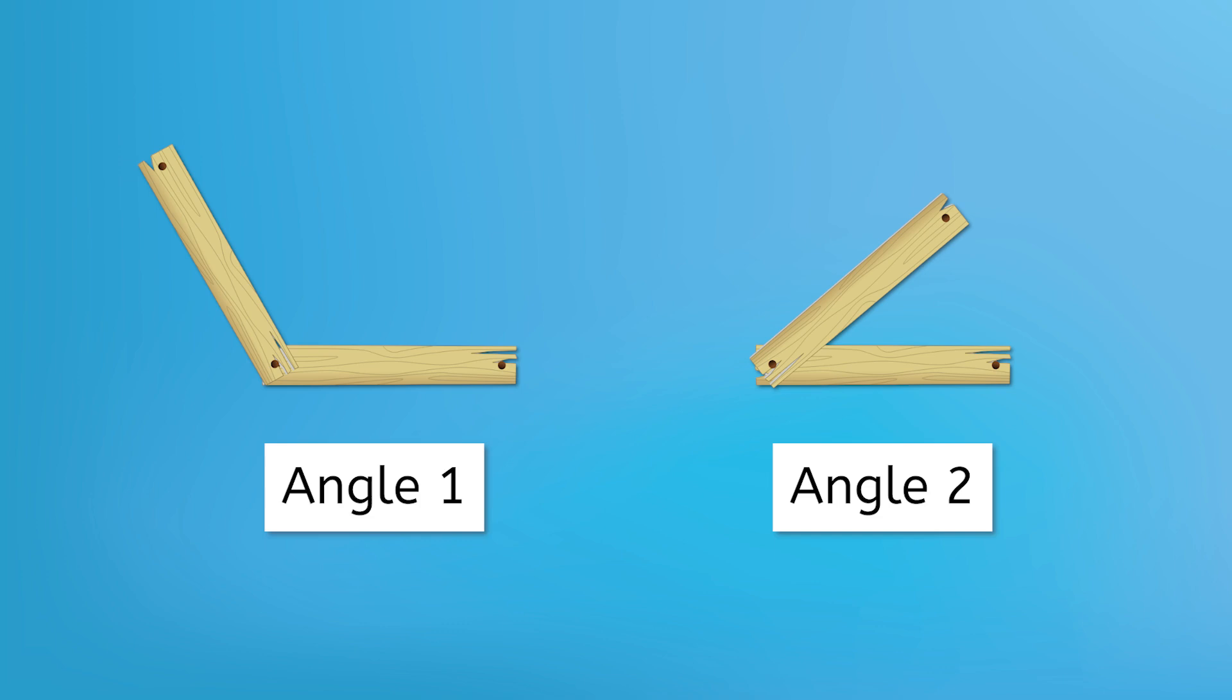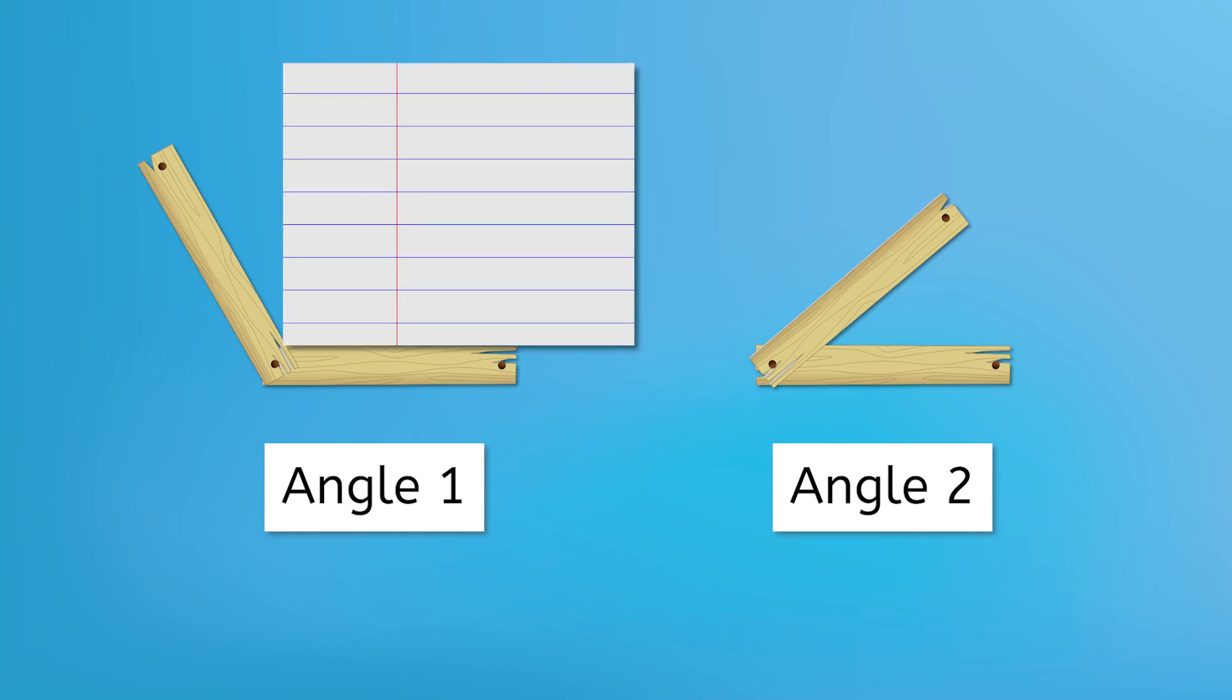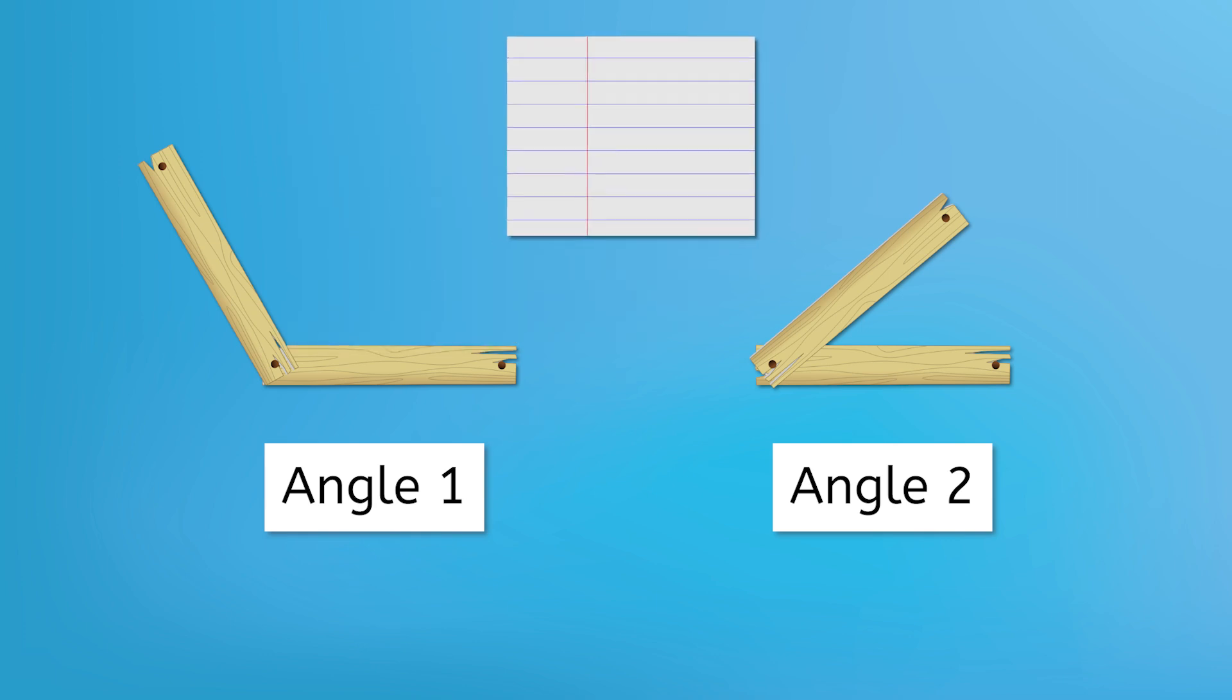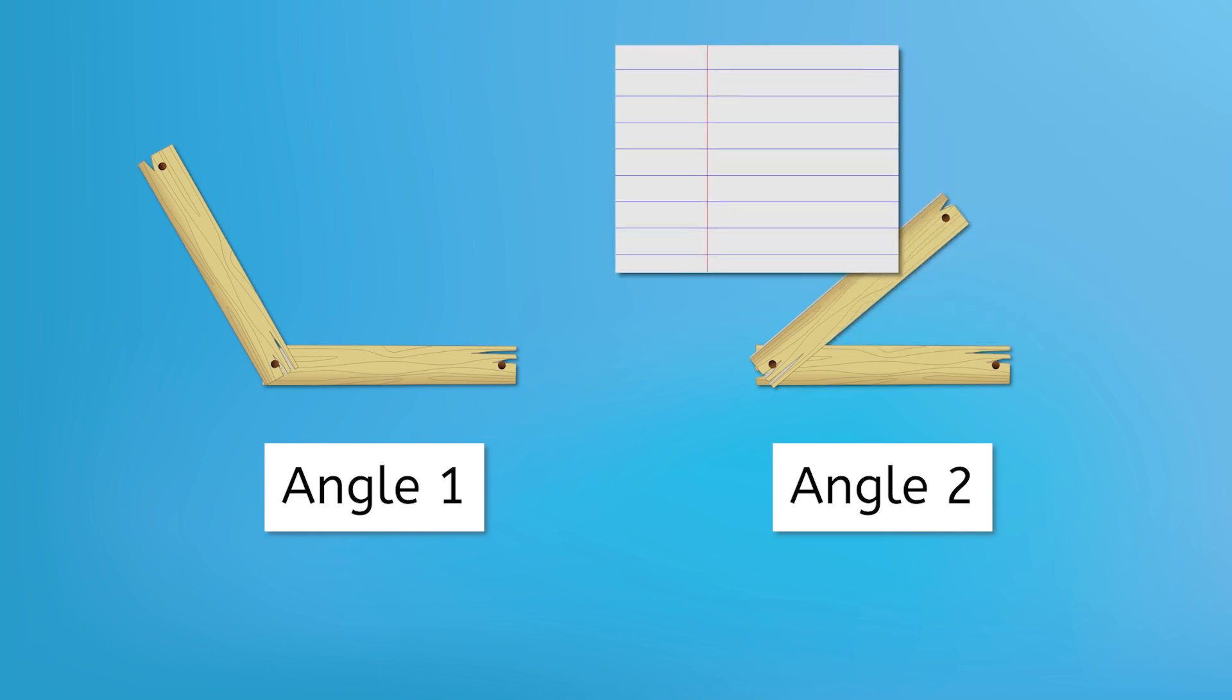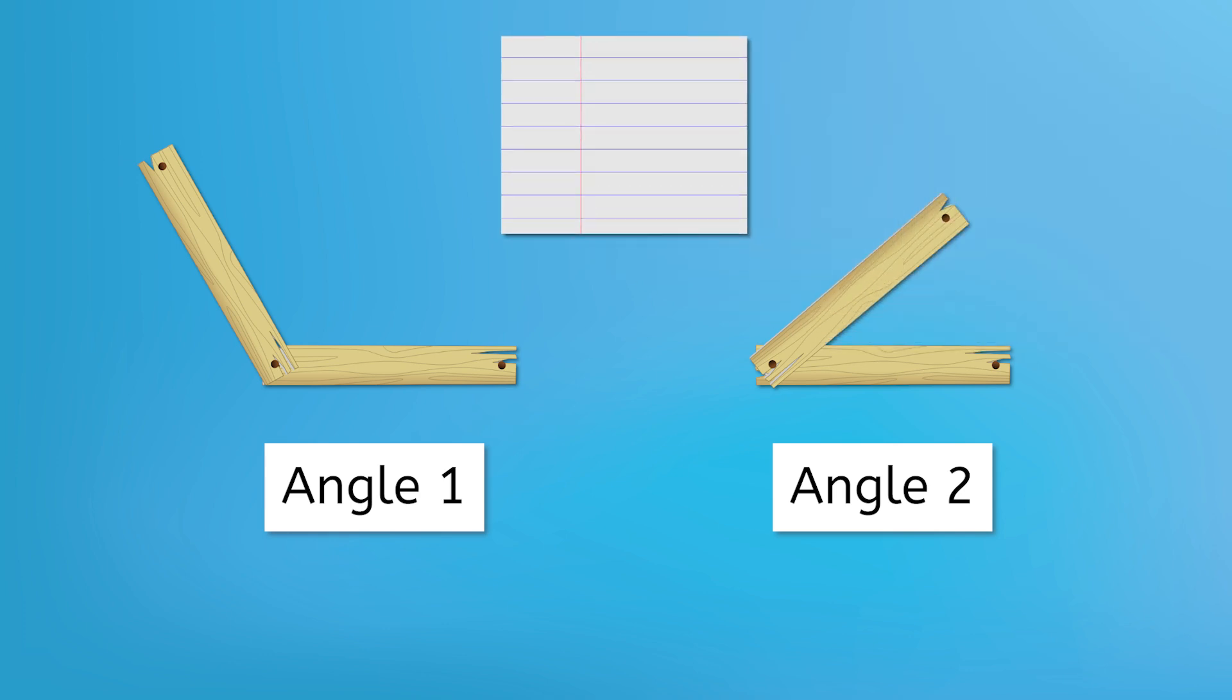But what about those other two angles? Are either of them right angles? Hint, you might want to grab a sheet of paper to help you. Well, first, let's fit a corner of our paper into each angle and see whether either of them matches. This first one doesn't fit. And the second one also doesn't fit. So neither of them are right angles.